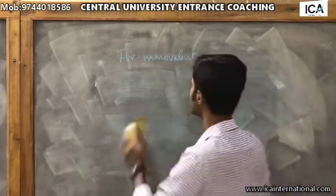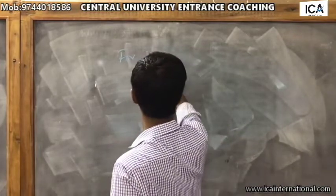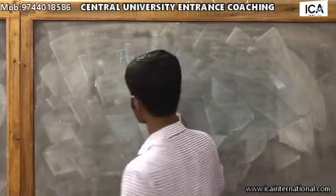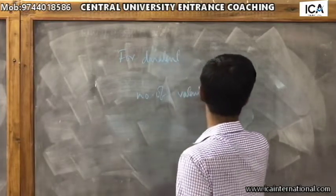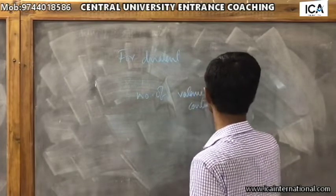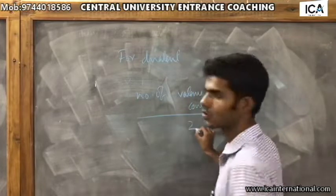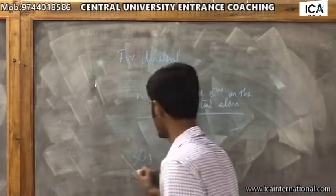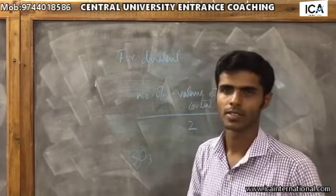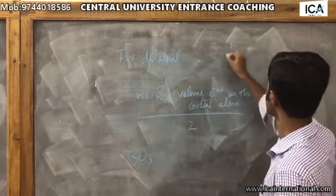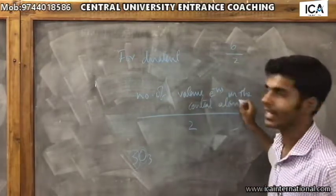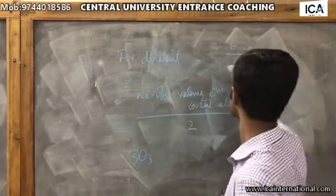When dealing with divalent elements, the hybridization formula changes to: number of valence electrons on the central atom divided by two. For example, in the SO₃ molecule, both sulfur and oxygen are in the sixteenth group. Sulfur has six electrons in its outer shell, so six divided by two equals three, which corresponds to sp² hybridization.